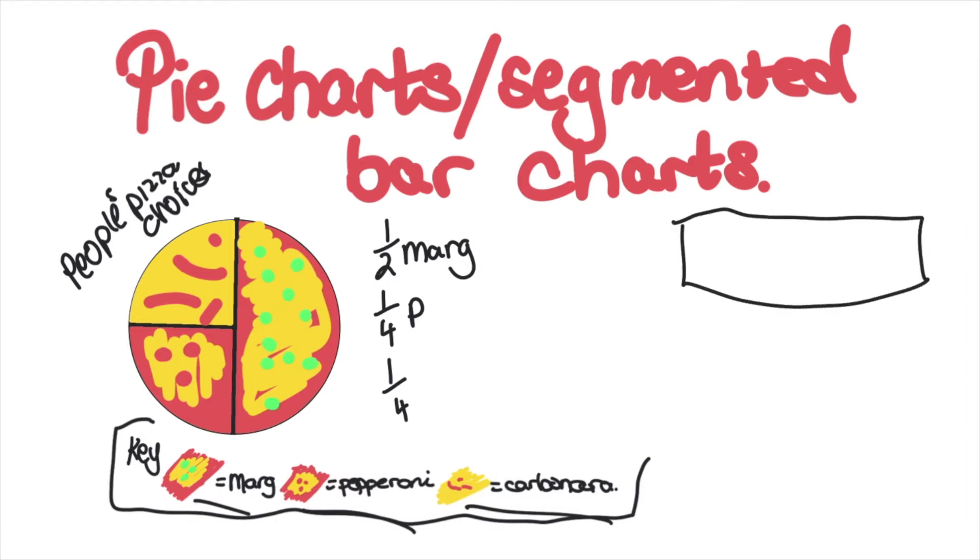It's nice and easy when you've got a circle, but you can actually make segmented bar charts which are rectangles. Half of it would be margarita, then the other quarters would be pepperoni and carbonara. You can split bars according to the proportion of people who picked it.